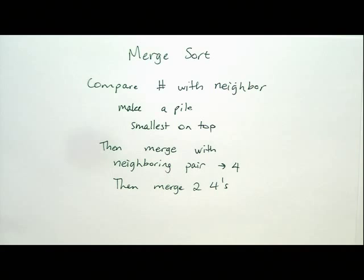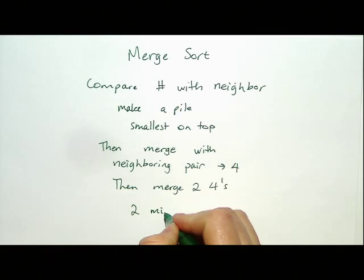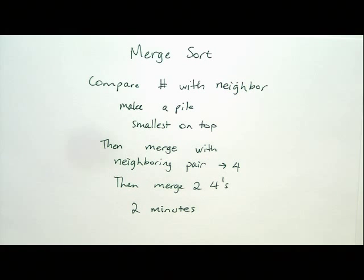You should be merging two sets of four now. That sort took us about two minutes. Did you have trouble doing it? Why do we have trouble? We're not a computer. How do you merge two piles that are sorted? Some of you just did it, so you should be able to say.